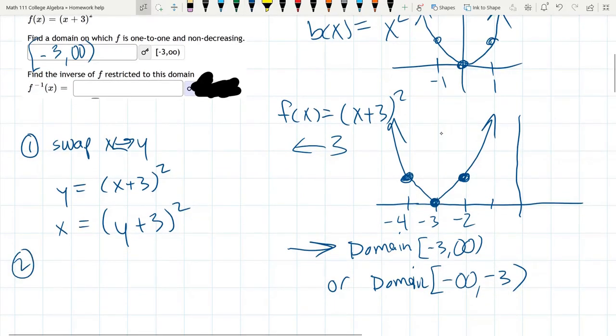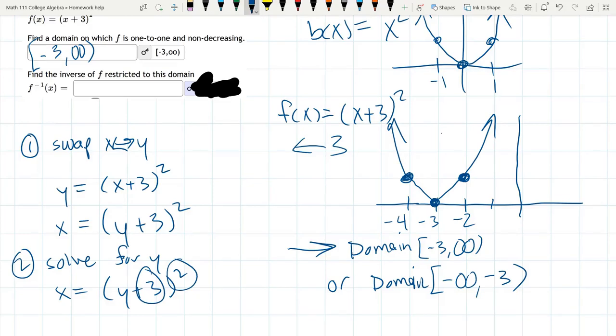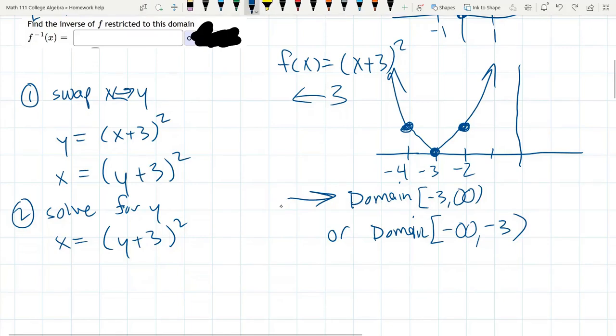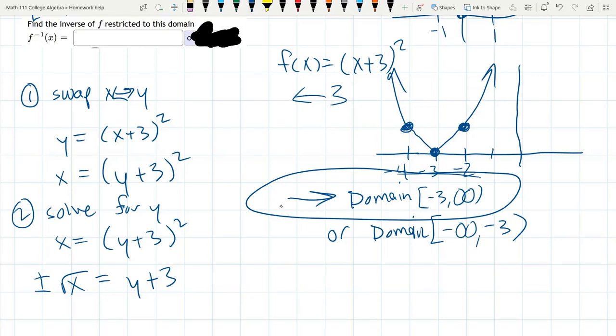Step two, solve for y. So y has two friends, there's a plus 3 and a square. When in doubt, go PEMDAS up. Addition, subtraction first, but it's hidden in parentheses, so we actually have to deal with the exponent first. So we're going to unsquare. When we do that, remember there's a plus minus. This plus minus is where our choice that we made over here comes into play. So I'm going to keep solving for y. I'm going to subtract 3. -3 ± √x = y.